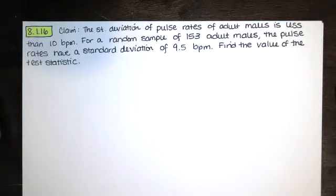The claim is that the standard deviation of pulse rates of adult males is less than 10 beats per minute. For a random sample of 153 adult males, the pulse rates have a standard deviation of 9.5 beats per minute. Find the value of the test statistic.